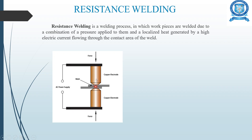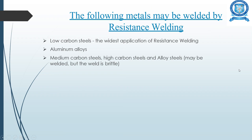In between these electrodes you place the metals that you are going to weld. AC power supply is given to the copper electrodes and force is applied from either end. So in resistance welding you are supplying both heat and pressure.